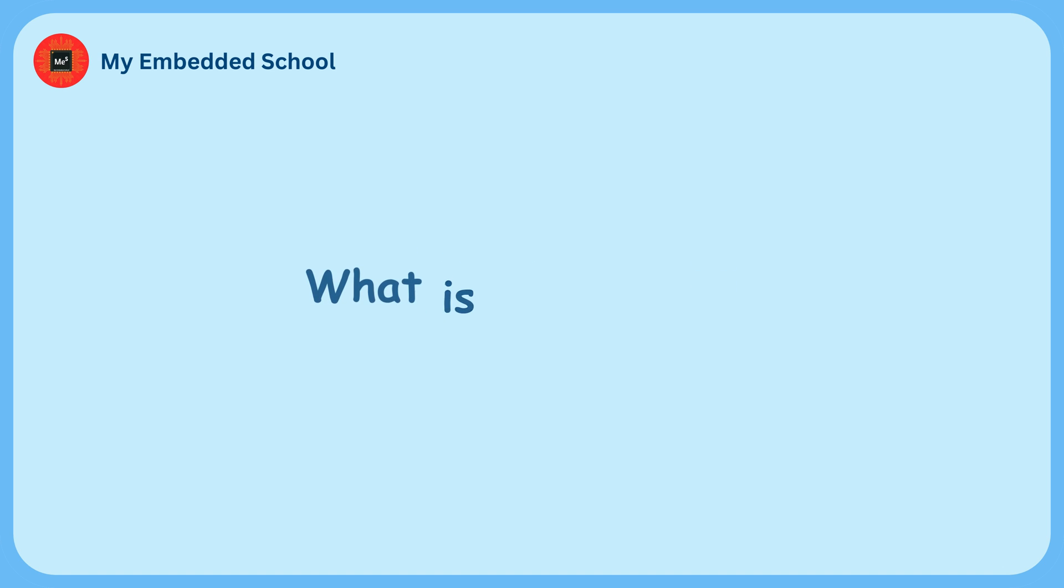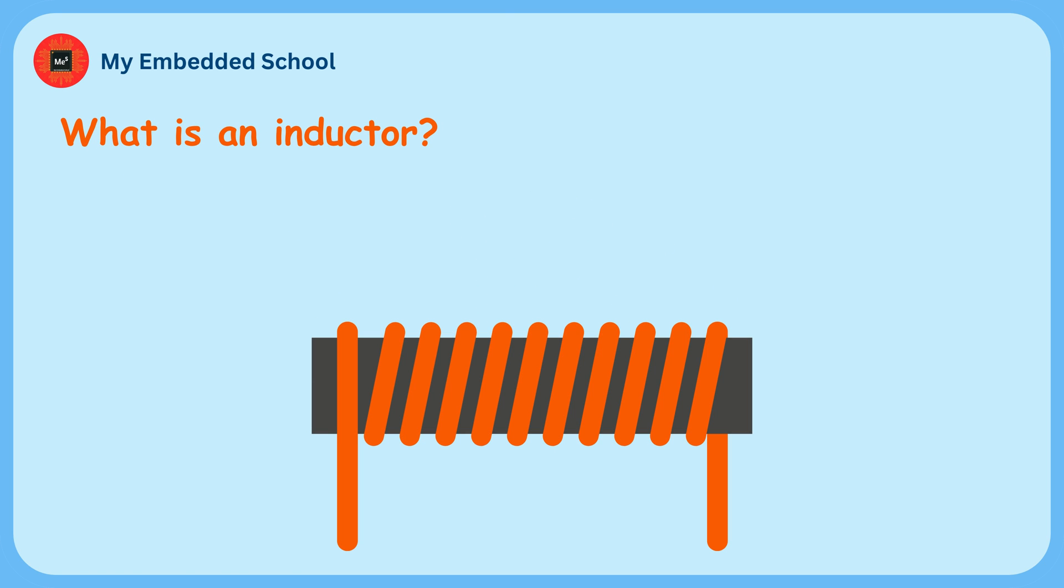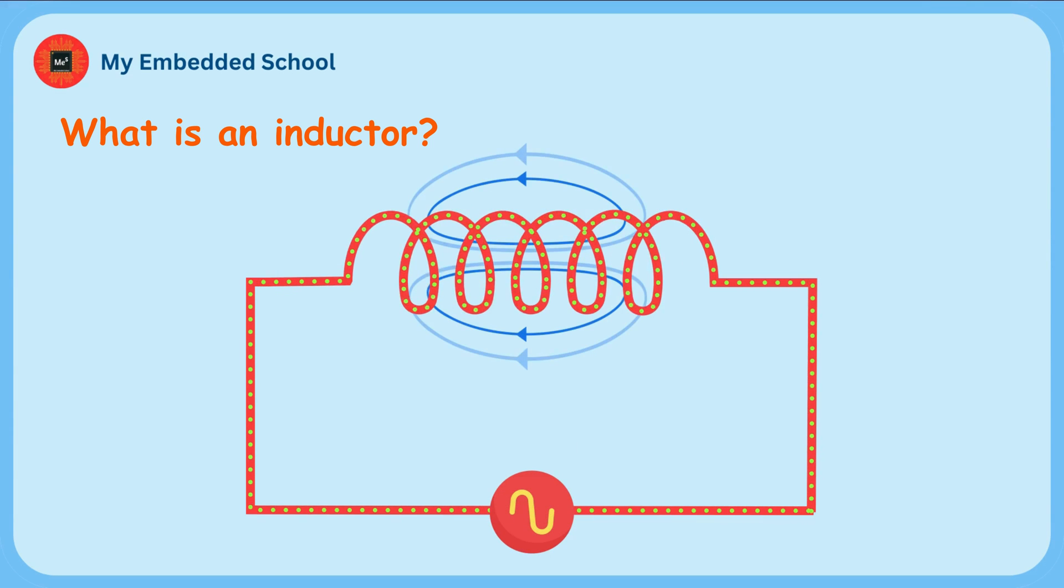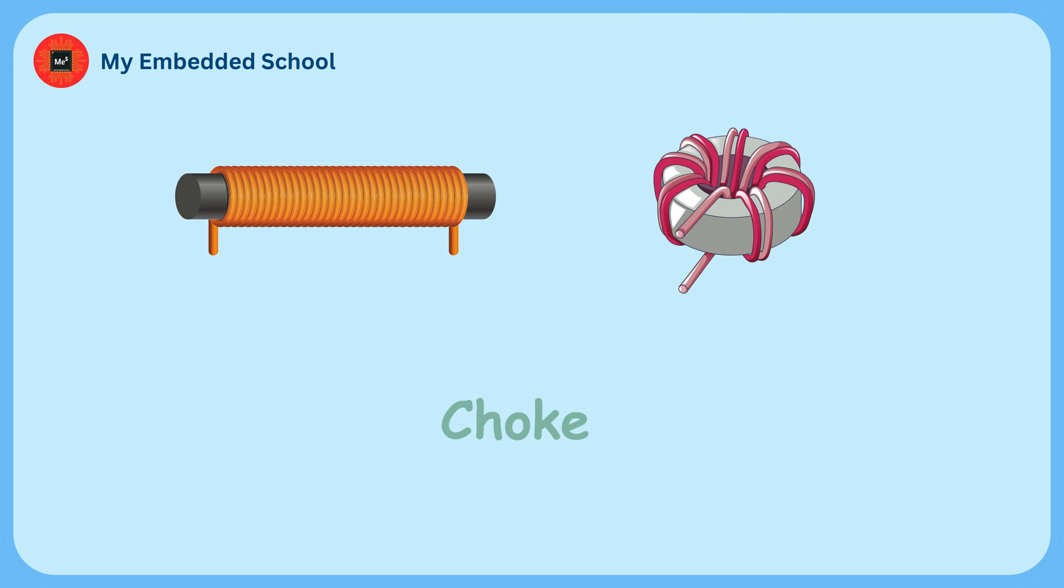We will first understand what an inductor is. An inductor is a passive and linear electrical component that has two terminals and stores energy in the form of magnetic field when electric current flows through it. It's also called coil, choke, or reactor.